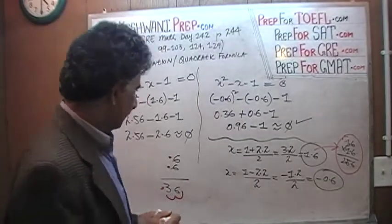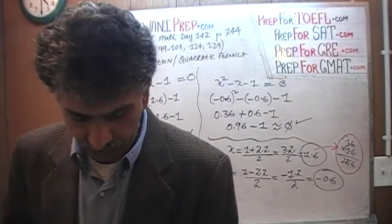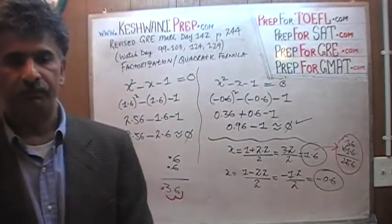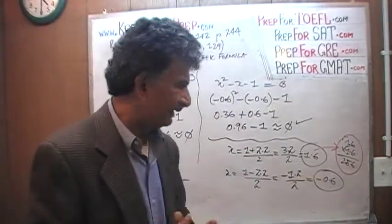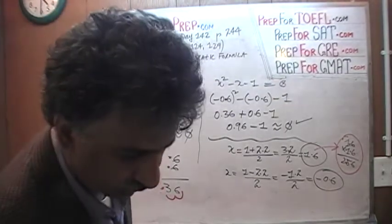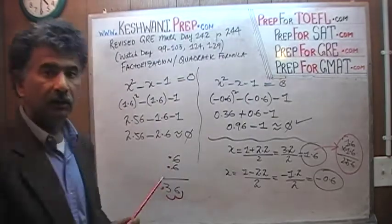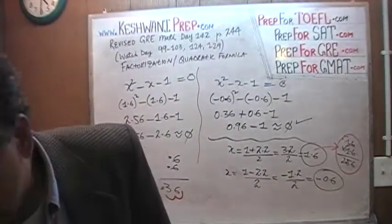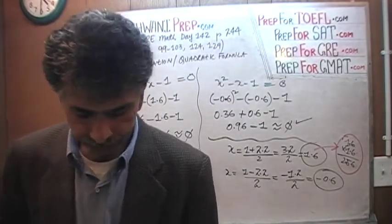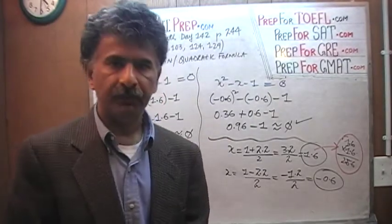In the book they leave the answer as 1 plus or minus root 5 over 2, which to me is an ugly form. The roots of the equation are positive 1.6 and negative 0.6, and we verified that both actually satisfy the equation. I will see you tomorrow where we will solve some simultaneous equations in problem number 7.